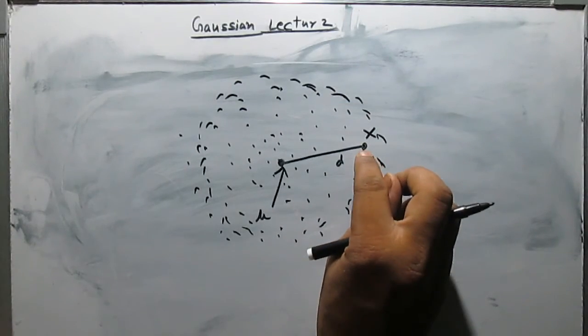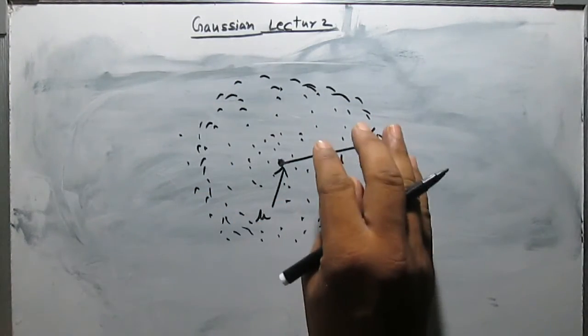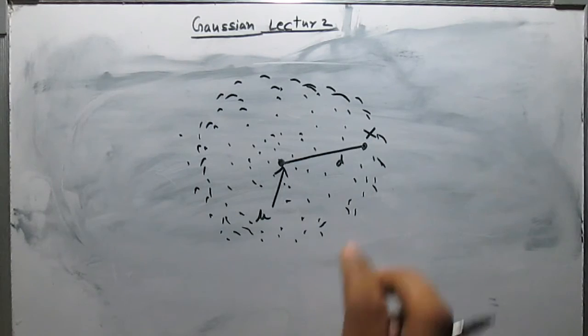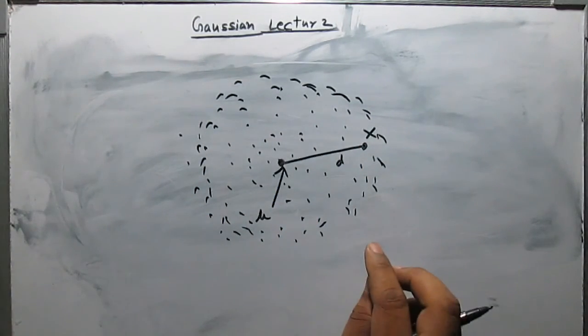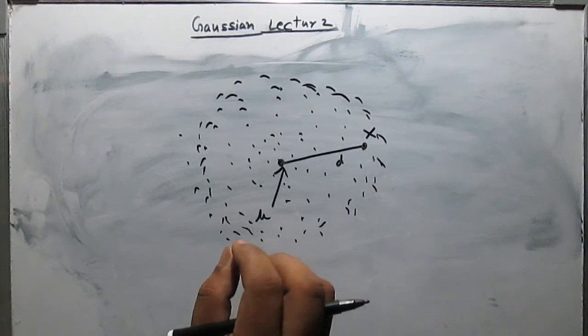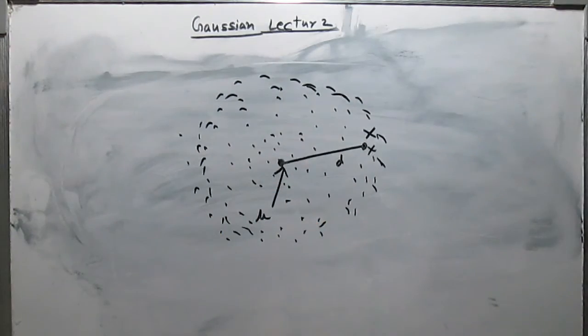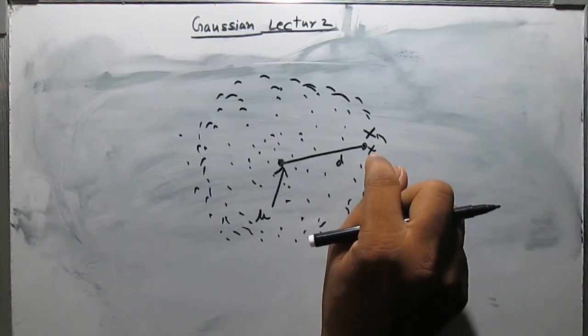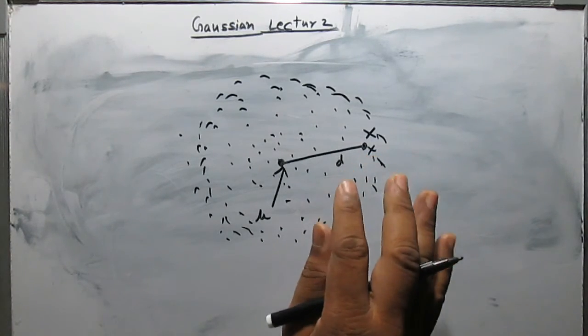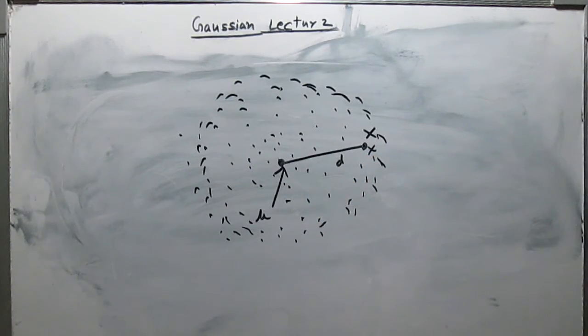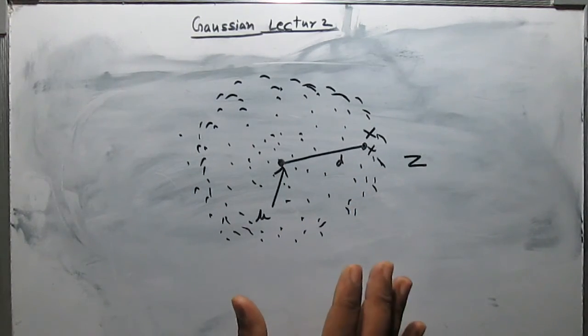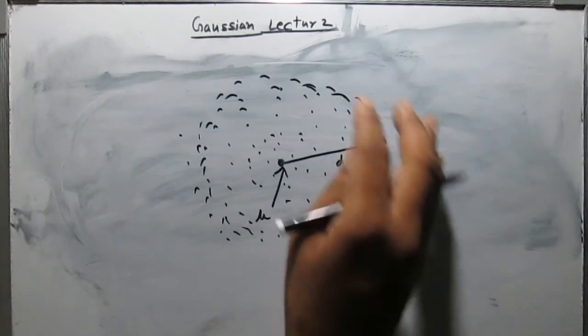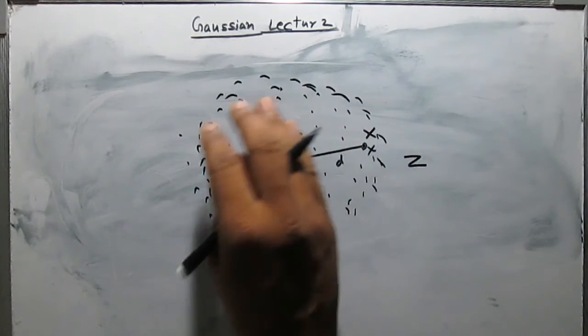Now we can see that this data point is part of this cluster and the occurrence of this point is much more likely as compared to the previous case because in this case the standard deviation is more. So the probability of occurrence of this x is more than the previous case. Although we can see the distance is d, we can understand that z-score is a better method to detect outliers than the deviation.